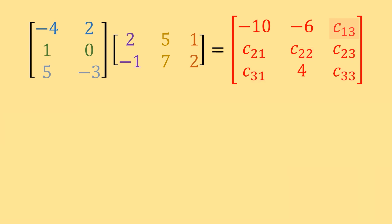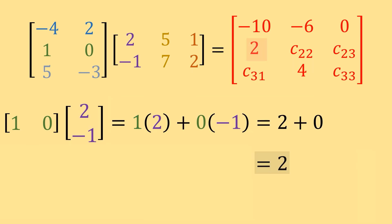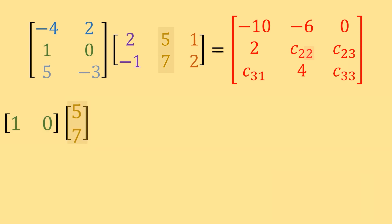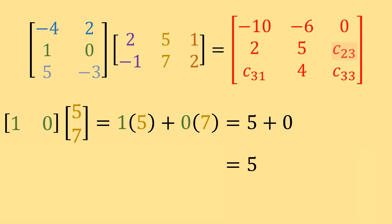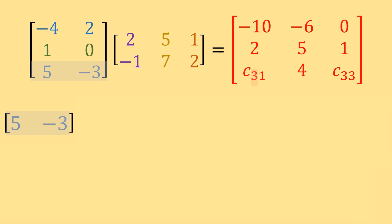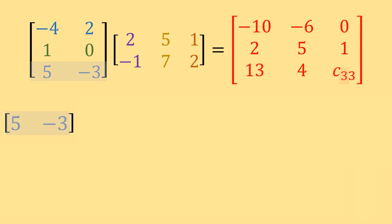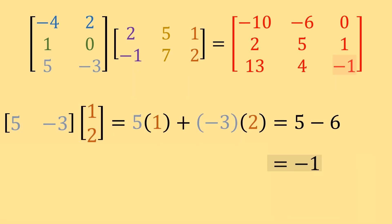C13 uses row one from the first matrix times column three of the second matrix, giving 0. C21 uses row two from the first matrix times column one of the second matrix, giving 2. C22 uses row two from the first matrix, giving 1. For C31, we use row three from the first matrix times column one of the second matrix, which gives 13. And C33 uses row three times column three, giving negative 1. The position in your result always tells you which row and column to use.